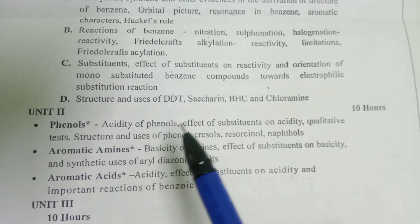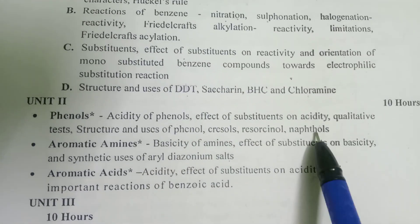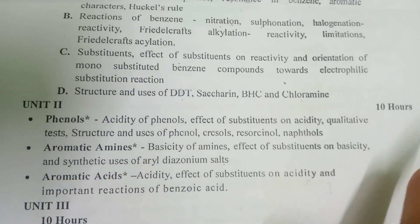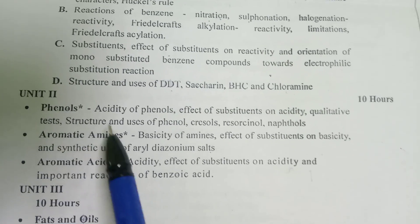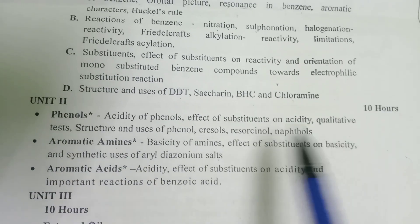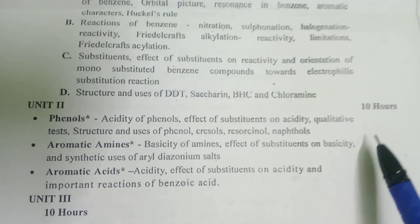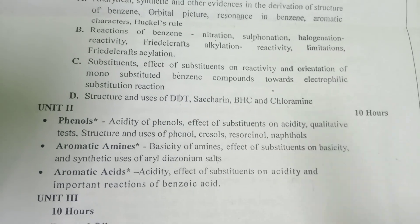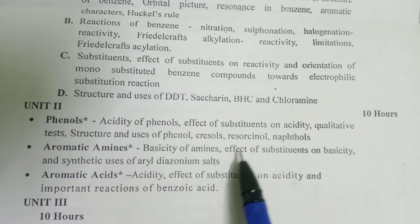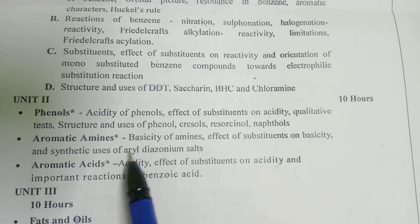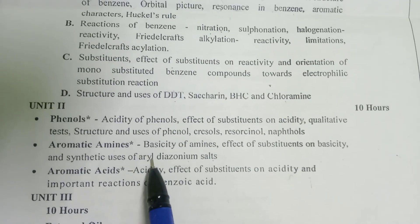Qualitative tests and use tests are there. It is called phenol or resorcinol, resonance, and naphthol — it is very important to know their structure and use tests. Then aromatic amines — aromatic amines contain an aromatic ring, called the benzene ring, with NH or NH₂. Aromatic amines — their basicity and effect of substitutions. Aryl diazonium salts — their structure and synthesis are covered.